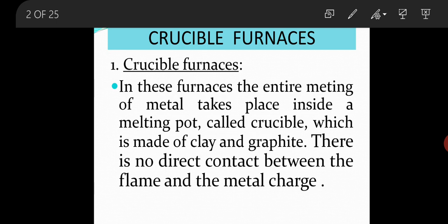So, what is crucible furnace? In these furnaces, the entire melting of metal takes place inside a melting pot called crucible, which is made of clay and graphite. There is no direct contact between the flame and the metal charge.